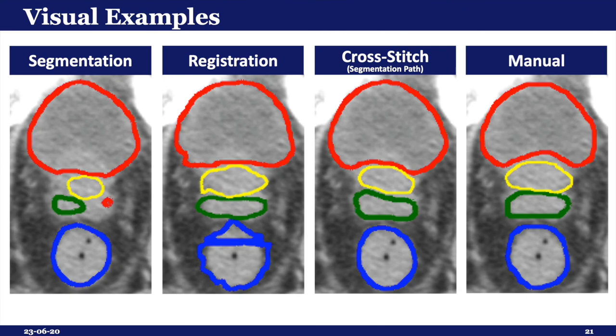Finally, here is one example of what the generated contours may look like. The segmentation network undersegments some organs and makes some false positive predictions. The registration output looks better, though it does suffer from some warping artifacts. The cross-stitch network doesn't appear to suffer from these issues, thus it seems to have successfully combined the strengths of both methods.